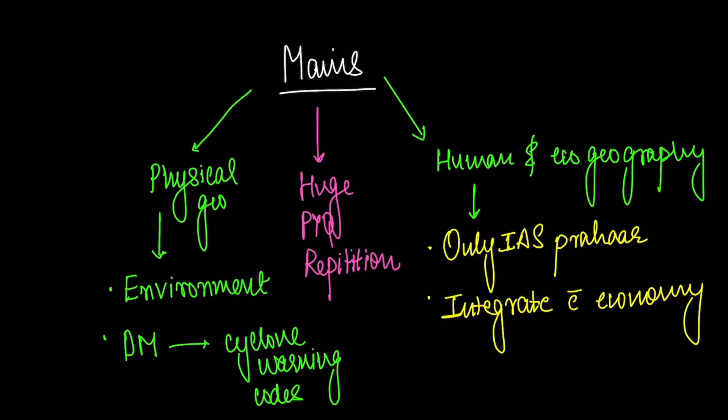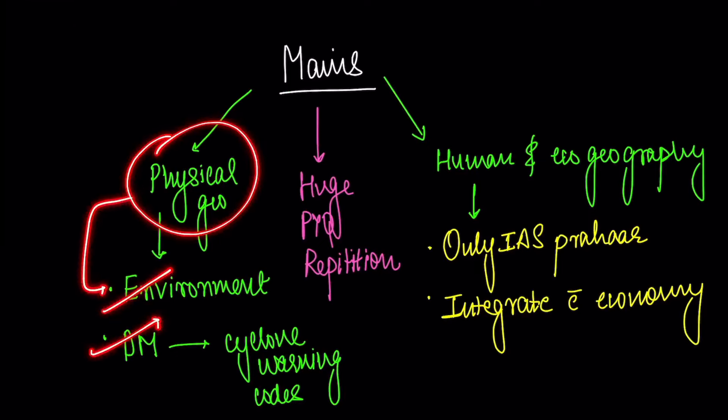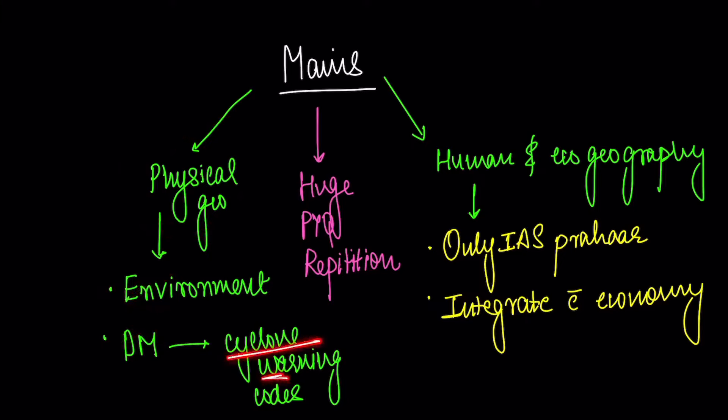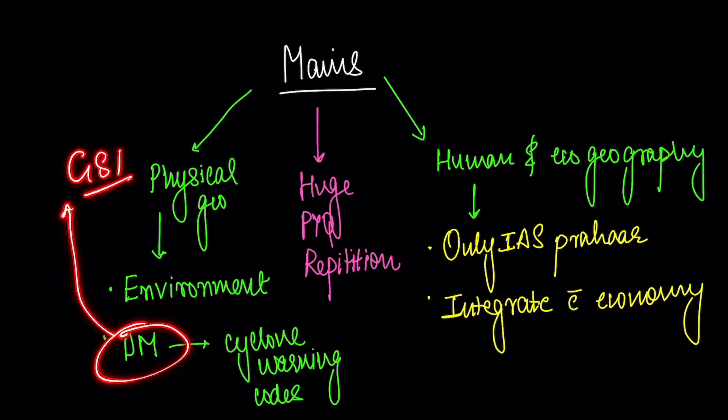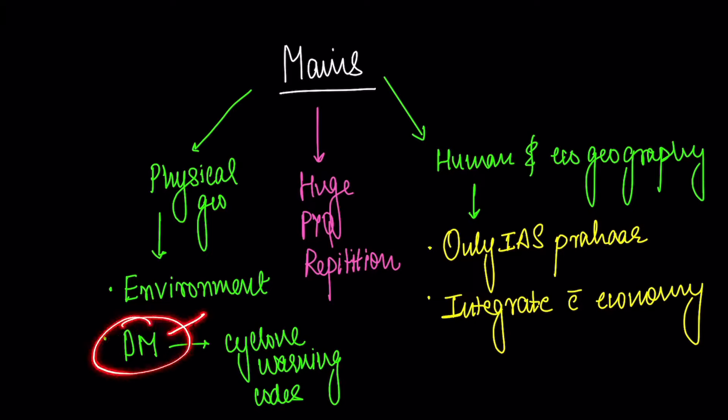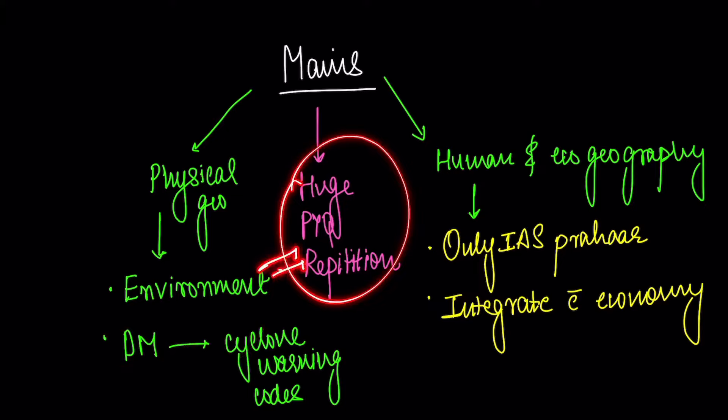Now let's talk about geography for mains. When you do physical geography for mains, do environment and disaster management together with it. Like this year in mains 2022 they asked cyclone warning codes. It's a direct disaster management question. But they asked it in GS1. And I'm telling you cyclone is an important topic. You check - in mains 2022 also they have asked about cyclone. But it was a disaster management question. So do these three things together. And of course PYQ repetition - again cyclone was asked this year.